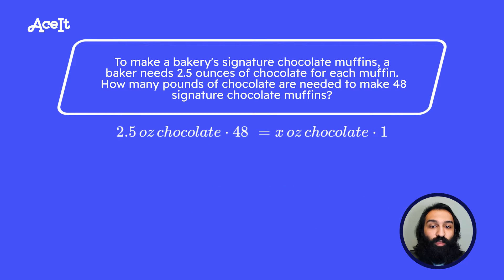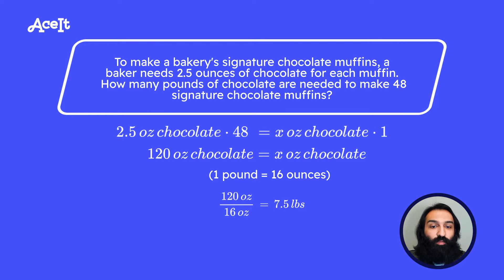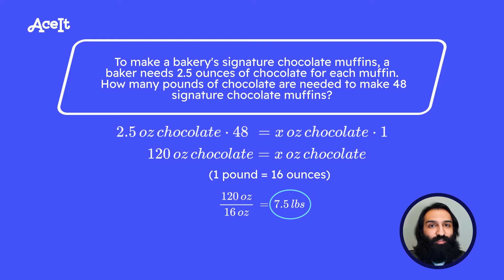From there, we can multiply 2.5 ounces of chocolate by 48 to get 120 ounces of chocolate. Since 1 pound equals 16 ounces, we convert 120 ounces to pounds by dividing 120 by 16 to get 7.5 pounds of chocolate. So to make 48 chocolate muffins, we need 7.5 pounds of chocolate.